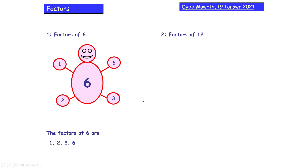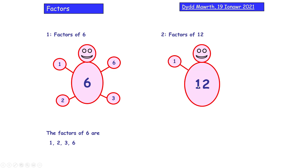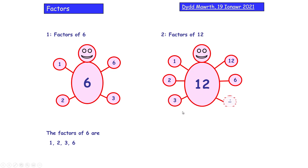Factors of 12: always start with 1, so 1 times 12. Does 2 go into 12? Yes, 2 times 6. Does 3 go into 12? Yes, 3 times 4. We've got them all now because 4 is on the other side. The factors of 12 are 1, 2, 3, 4, 6, and 12. Make sure you write that down.